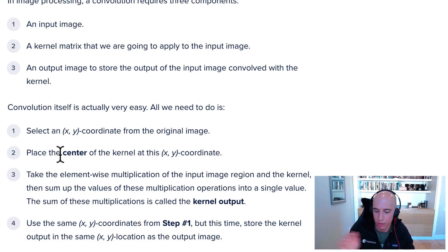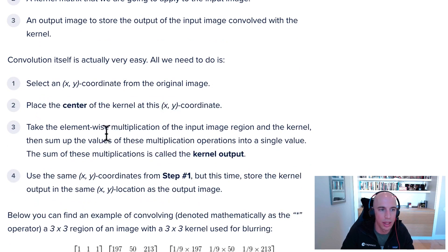The convolution process is actually really simple. Keep in mind we're sliding from left to right and top to bottom, one pixel at a time. We stop at our current x, y coordinate in the original image, place the center of the kernel at this x, y coordinate, and take the element-wise multiplication and then sum the values together.